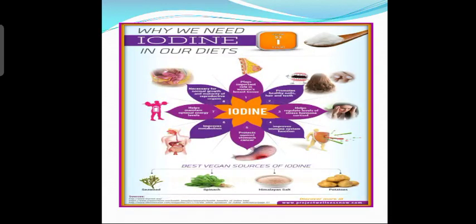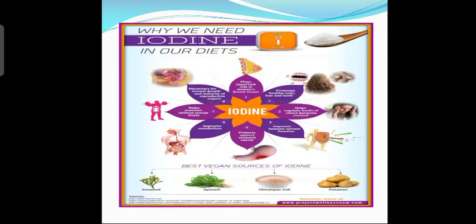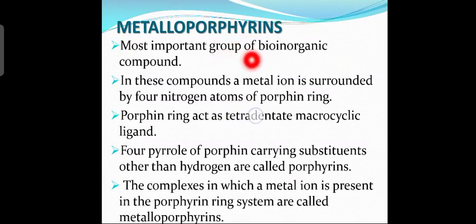Deficiency of iodine causes goiter and abnormal functioning of the thyroid gland. Now, what are metalloporphyrins? Metalloporphyrins are an important group of bioinorganic compounds. In these compounds, the metal ion is surrounded by four nitrogen atoms of the porphyrin ring.